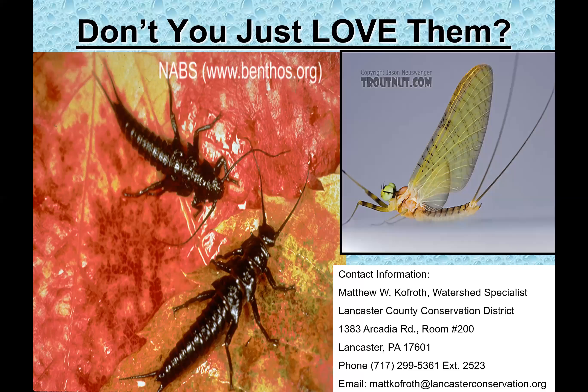We've covered a lot of these macroinvertebrates — contact information is available if you have questions. These critters are very good indicators of water quality, whether you find sensitive, tolerant, or middle-of-the-road species. Yes, you can do chemistry and habitat assessments, but aquatic insects do a lot of the heavy lifting biologically. That's why our volunteers go out there, and why DEP and federal agencies use macroinvertebrates to study water quality. Get out there, use these characteristics and techniques to study your streams, and use this webinar as a building block. Thank you for your time.